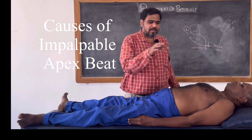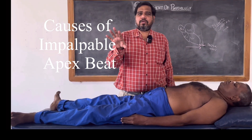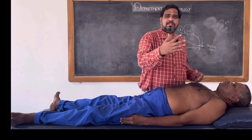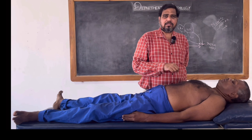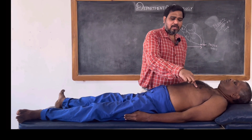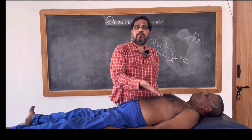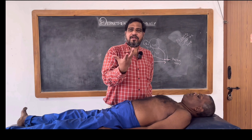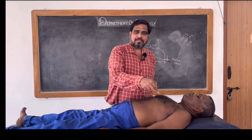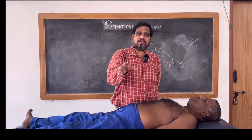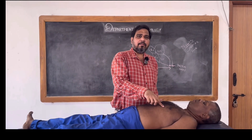Some causes where it will be very difficult to localize or the apex beat will be impalpable: pericardial effusion, right-sided pneumothorax — because the enlarged lung creates difficulty localizing the apex beat — dextrocardia, where the heart is entirely shifted so you will not be able to find the apex beat on the left side, massive pleural effusion, massive pneumothorax, and obesity, where excess subcutaneous fat masks the impulse you are palpating.